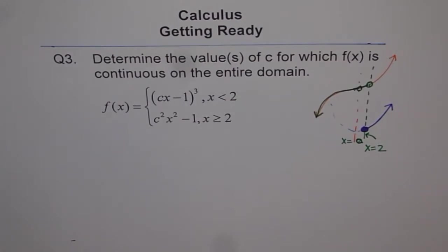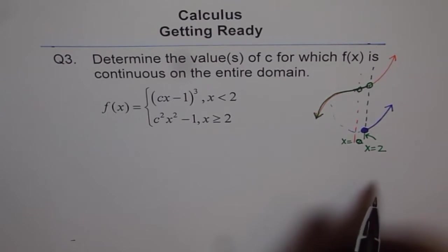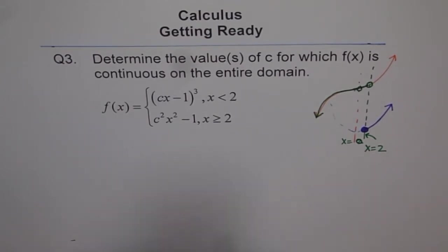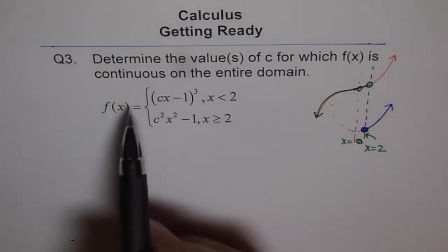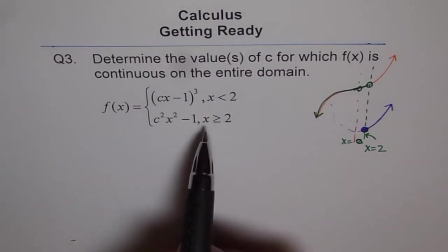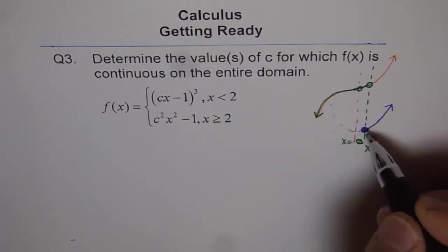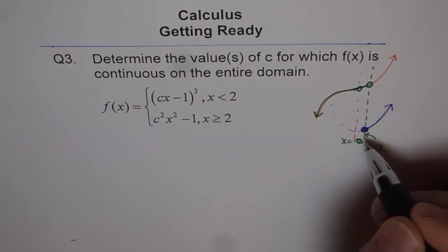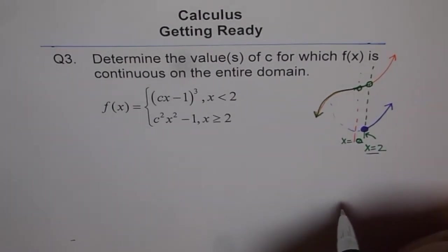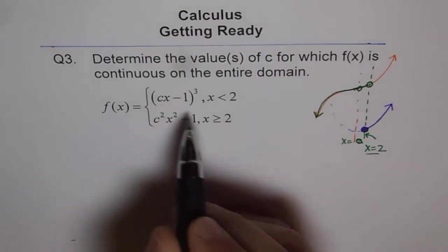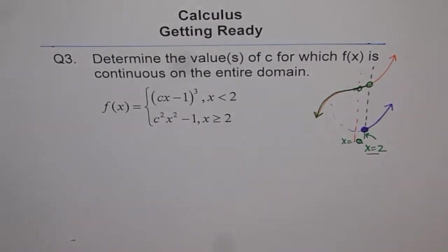I hope you understand the concept. The idea here is to brush up, understand the concepts, and then get started with calculus. Now, coming back to the problem. We see that there is a discontinuity, and the discontinuity is at x equals 2. To make it continuous, we have to put these pieces together at x equals 2. So let's put x as 2 and equate them.